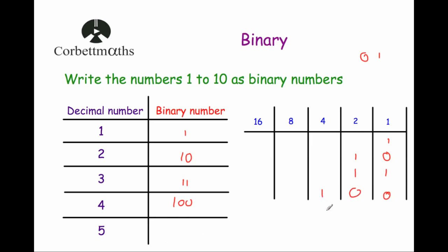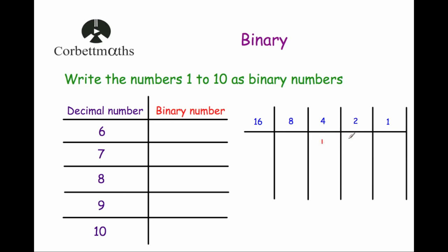The number 5: we use a 4 and a 1, so that's 101 in binary. The number 6: that's a 4 and a 2 and no 1, so that's 110. The number 7: a 4, a 2 and a 1, which gives us 7 — so 111. The number 8 is just a 1 in the 8s column followed by zeros, so 1000 in binary.